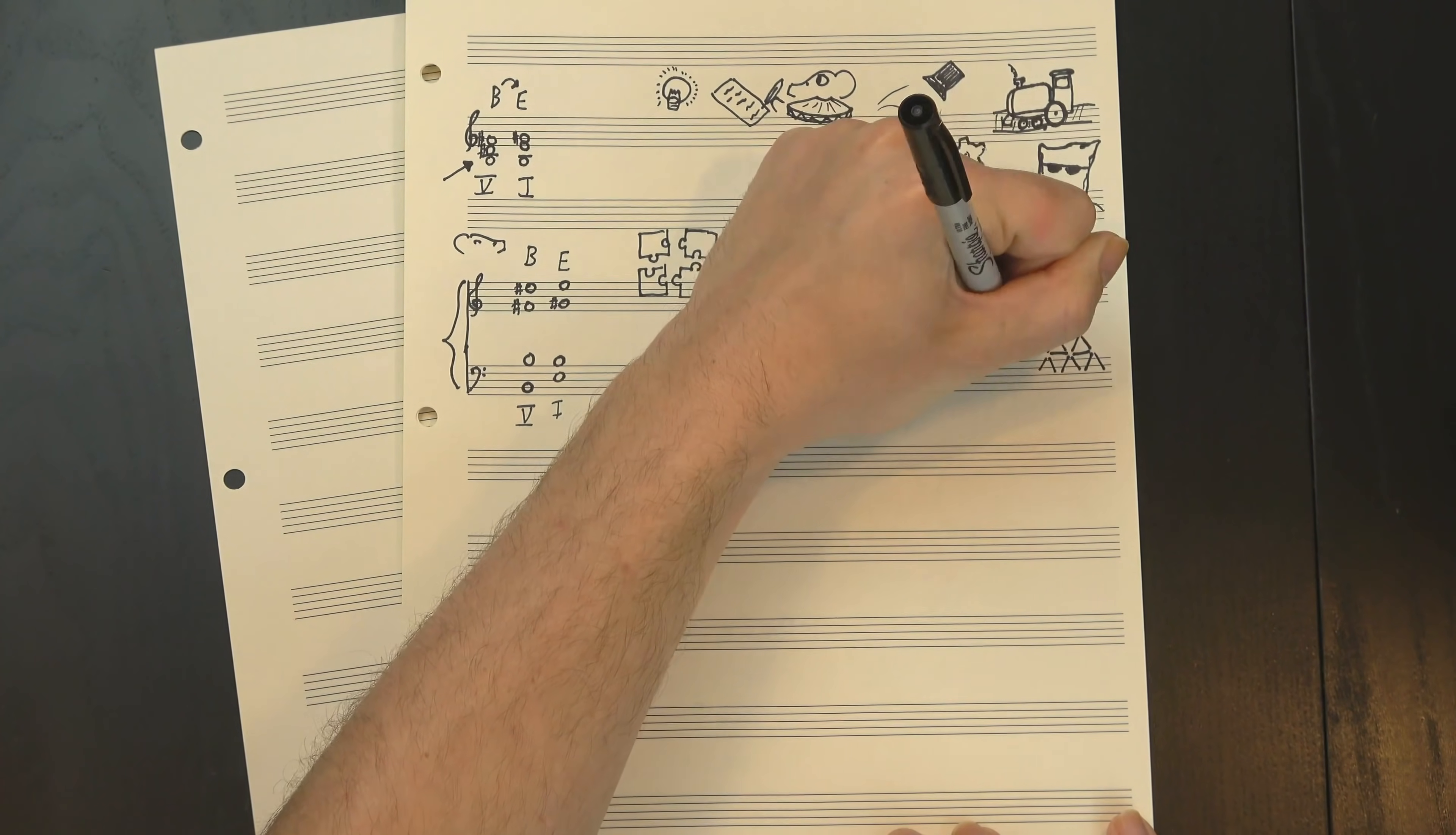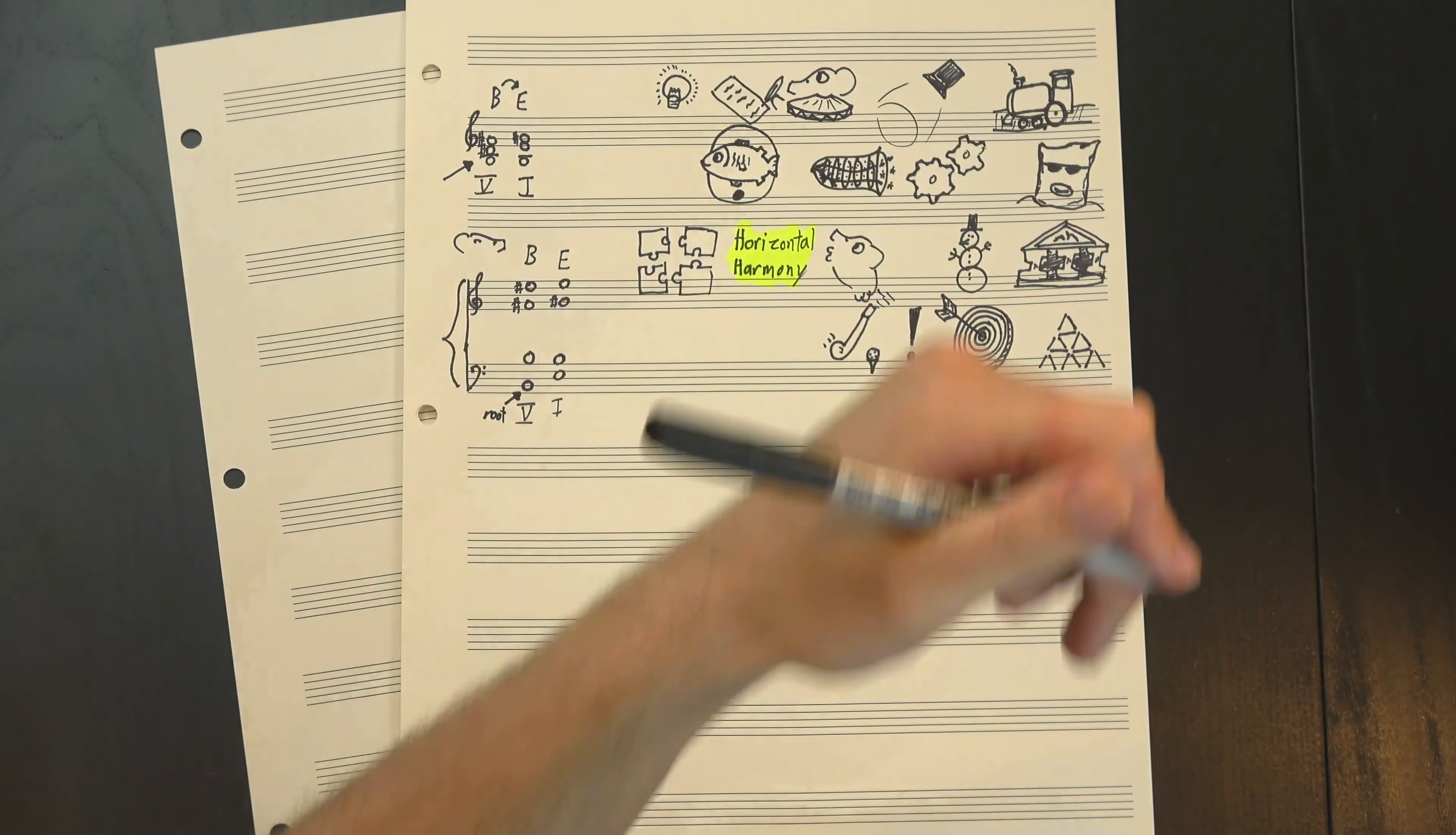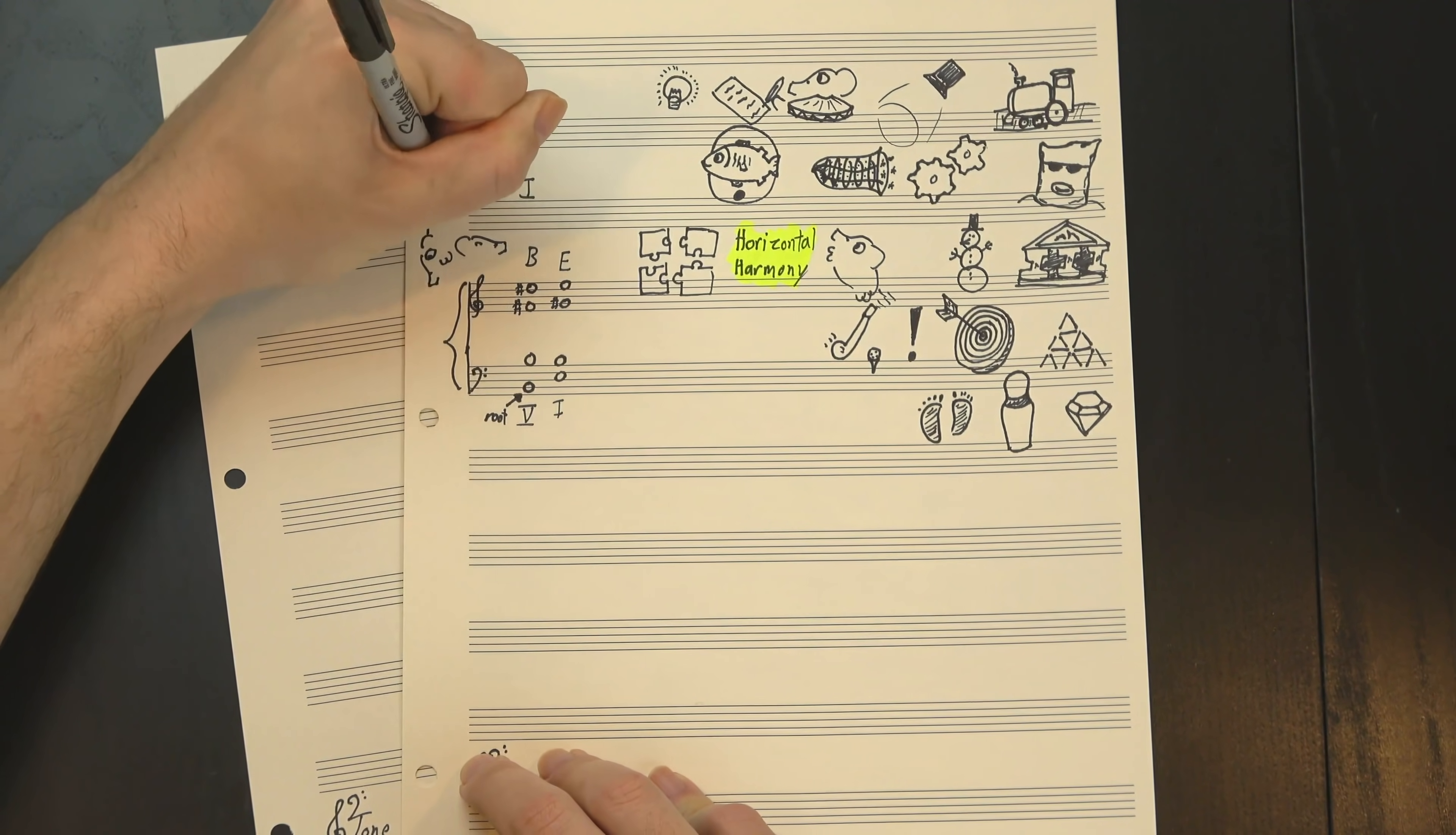So instead of looking for a chord that sets up the V, what we really want to be doing is taking each of our target notes and finding the best note to put in front of it. We've got four of these defined, so let's start with my favorite voice, the bass. Here we have it playing the root of the V chord, which is pretty important, so we've gotta set it up just right. And generally speaking, the best way to approach a note is by half-step, so since we're trying to get to B, let's step down from C.